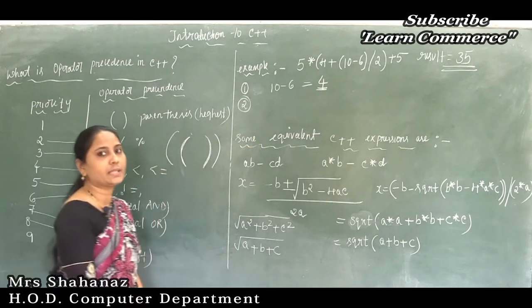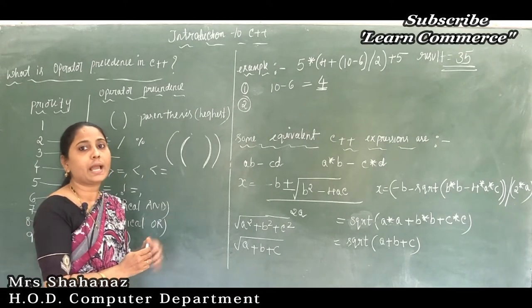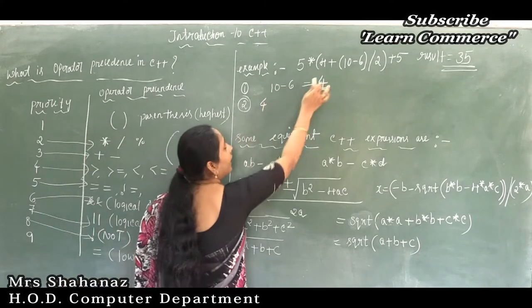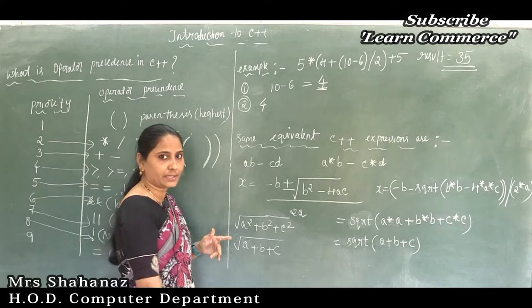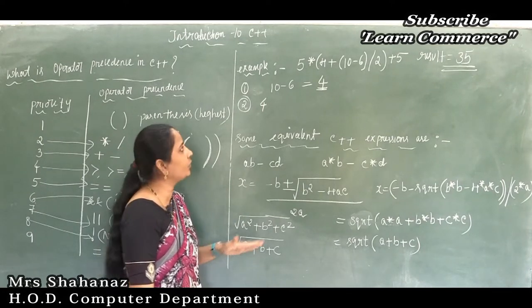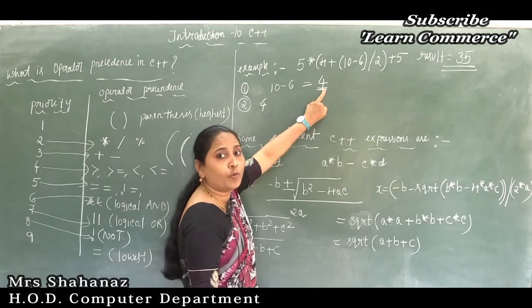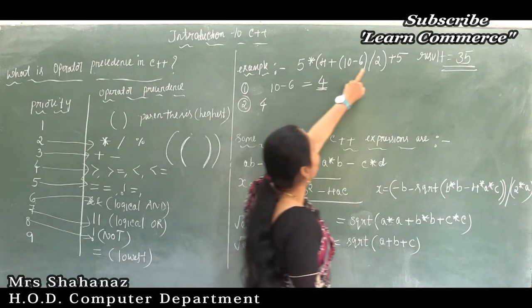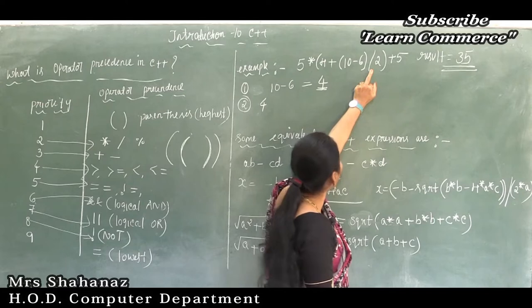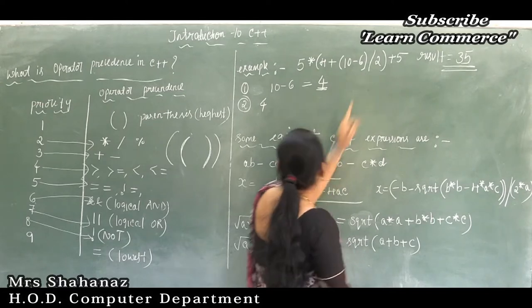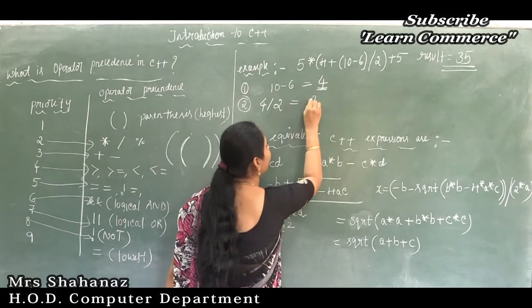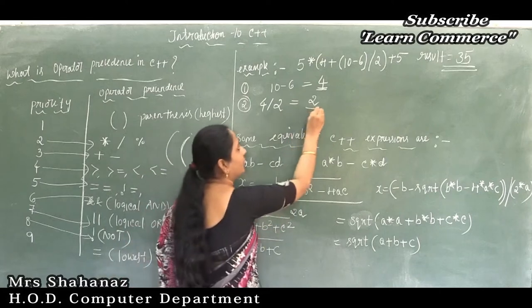In the second step, we take the result of the first expression — which is 4 — and divide it by 2. The result is 2.